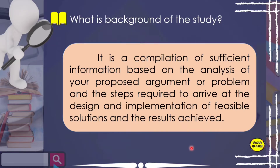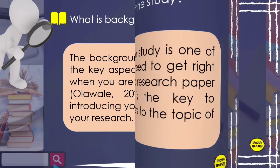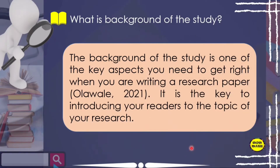The background of the study forms the first section of the introduction of a research paper. It provides an overview of the study and establishes the context of the study. According to Olawali (2021), it is one of the key aspects you need to get right when writing a research paper — it is the key to introducing your readers to the topic of your research and explains why the proposed research is important and essential to understanding the main aspect of the study.